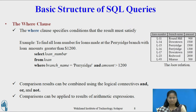The WHERE clause specifies the condition that results must satisfy. For example, to find all loan numbers for loans made at the Perryridge branch with a loan amount greater than $1200: SELECT LOAN_NUMBER FROM LOAN WHERE BRANCH_NAME = 'Perryridge' AND AMOUNT > 1200.